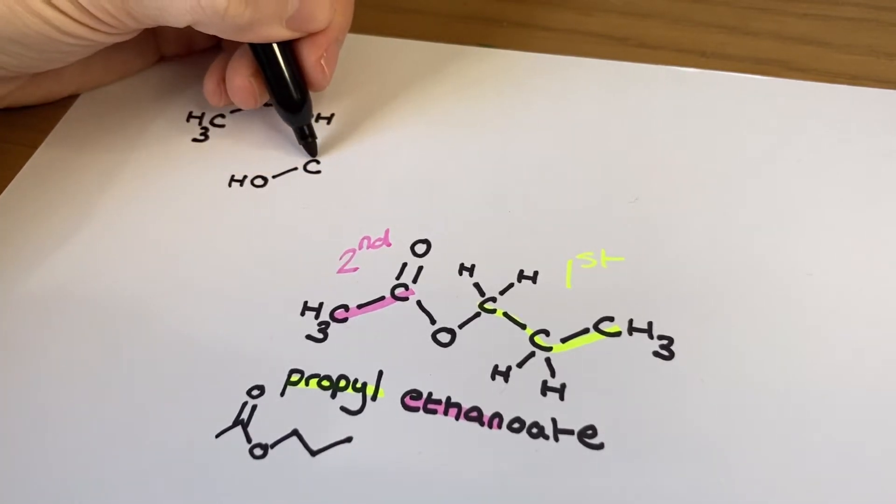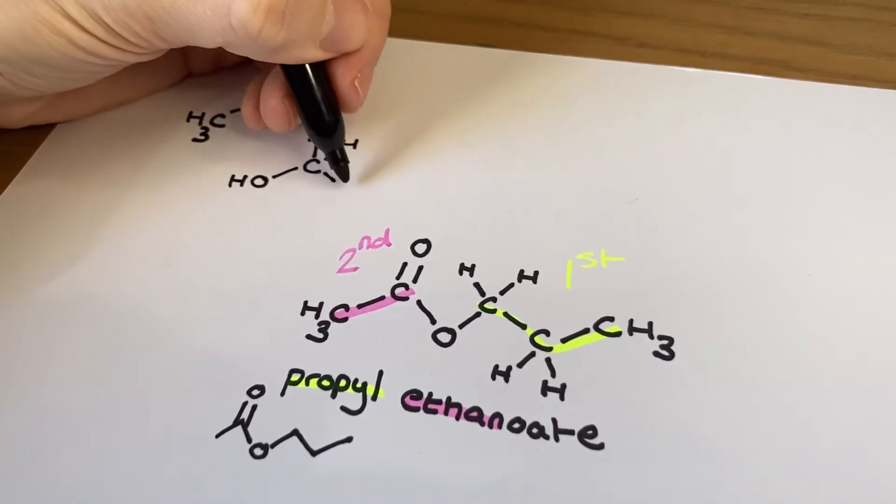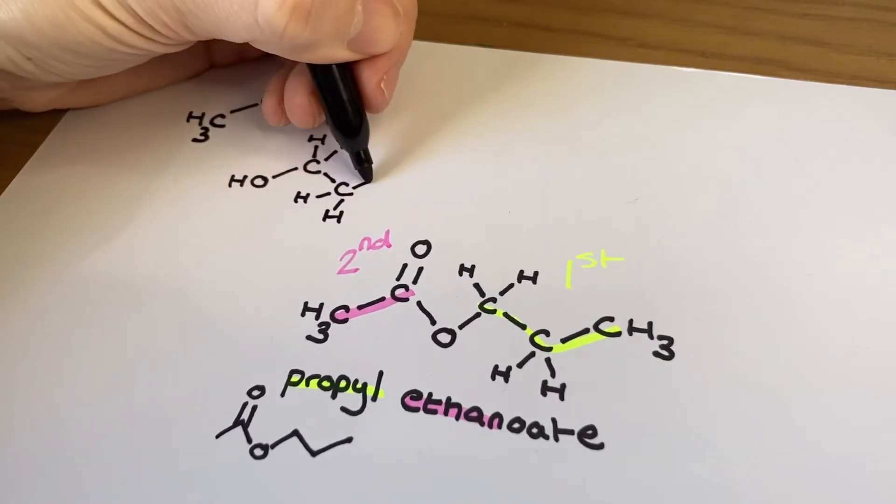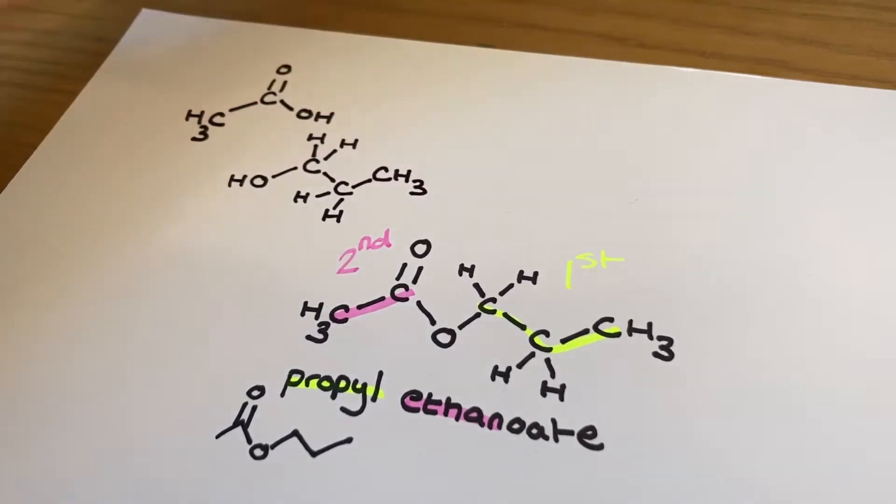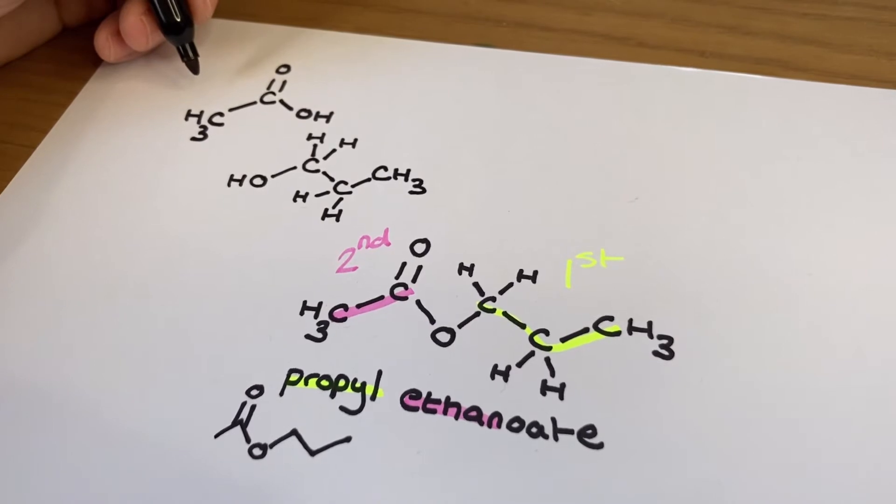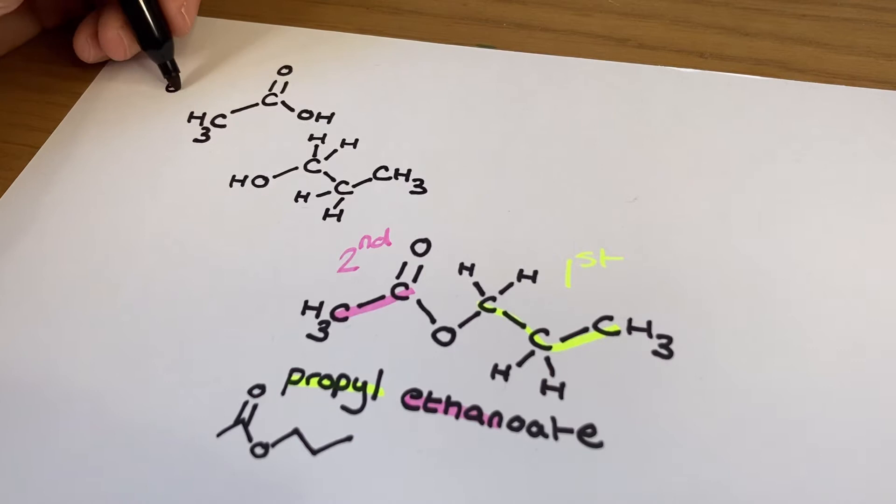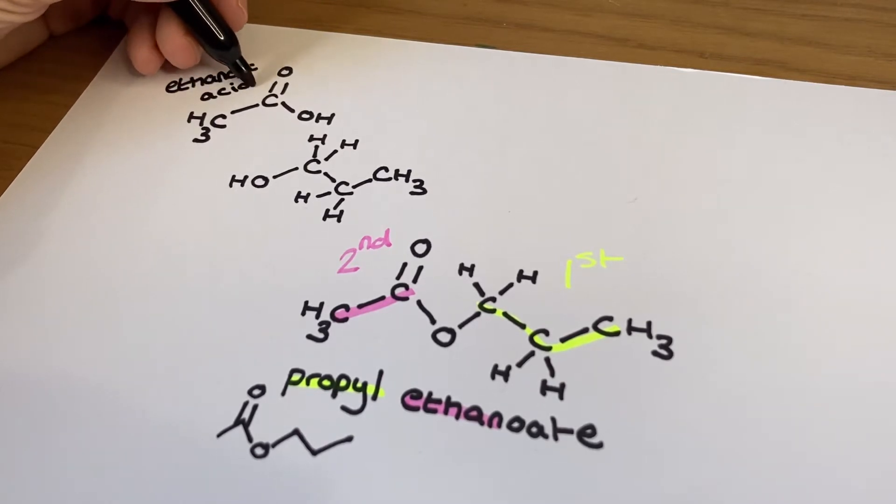For example, to achieve the propyl section of my ester I must use propan-1-ol, and to achieve the ethanoate section of my ester I must use ethanoic acid. This is important as the carboxylic acid will always provide the section of the ester containing the C double bond O, and the other side which only has the one single bond to an oxygen will always come from the alcohol. I can also tell I've not used propan-2-ol as my choice of alcohol because the propyl section of my ester is a straight chain connected at the end to the ester functional group.